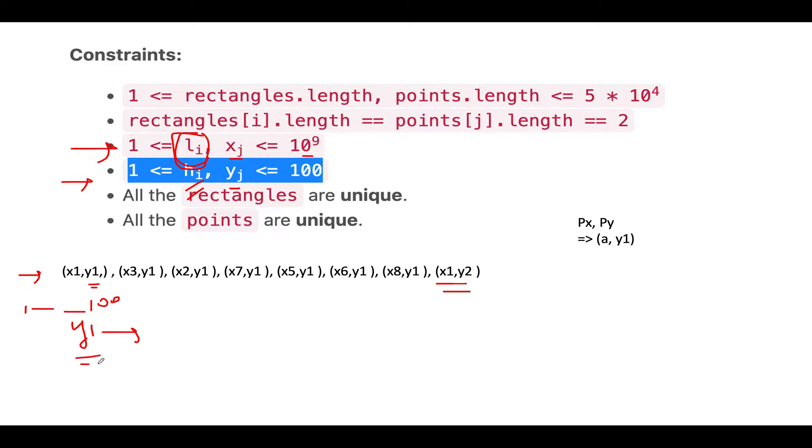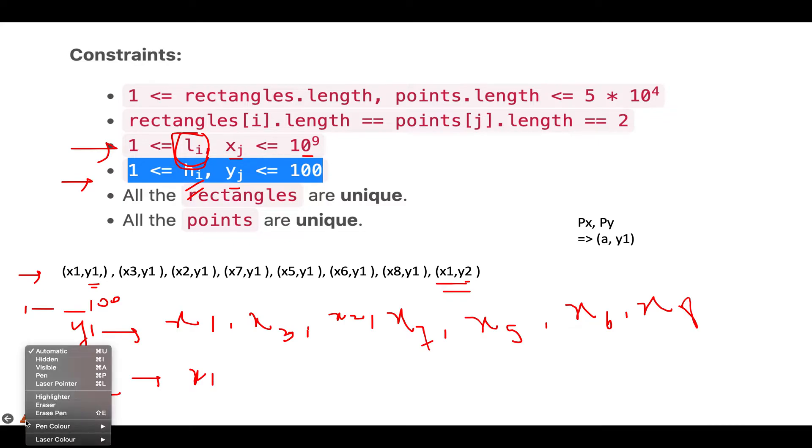What we can do is club all the y coordinates together and form a group of x coordinates along with that y coordinate. So what I am trying to basically say is for each y coordinate that will lie in the range of 1 up till 100 we will try and identify the various x coordinates corresponding to it. So this is our y coordinate which is y1 and what we can do is create a map of all the x coordinates that have the same y value. Then we have x1, x3, then x2, then x7, then x5, then x6, then x8. Next we have y2 and there is only one coordinate which is x1 corresponding to it. Basically you are creating groups corresponding to each y value that we have.